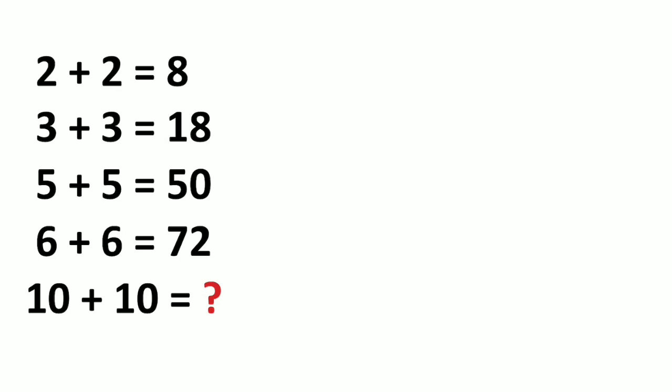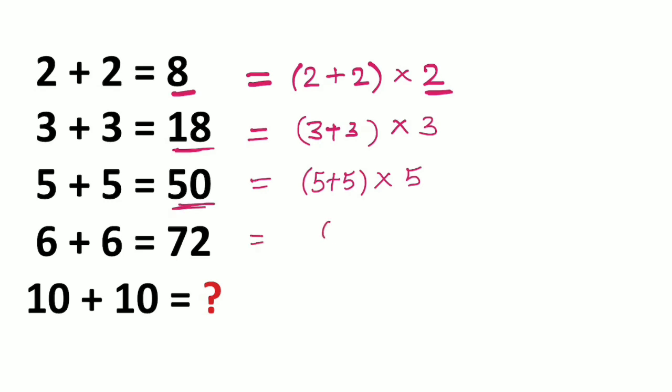So let us see the logic behind this. We can write this 8 as 2 plus 2 into 2, right, 4 into 2, the repeated digit. So here we have 4 into 2 which is 8. Similarly, this is 3 plus 3 times 3, right, 6 into 3 is 18, and this is 5 plus 5 times the 5 which is 10 into 5 is 50. This is 6 plus 6 times 6 which is 72. So the answer is 10 plus 10 into 10, which is 200.